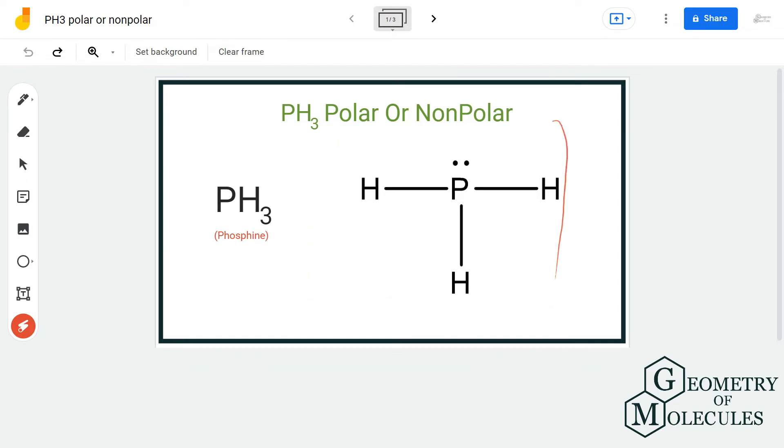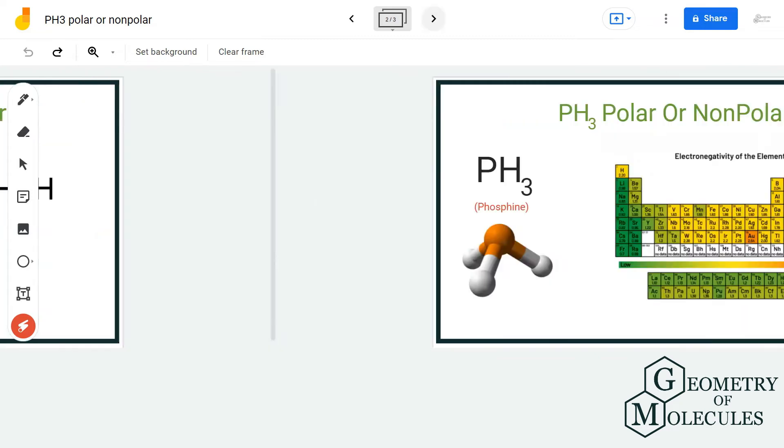So this is the Lewis structure of PH3 molecule in which the phosphorus atom is in the center and it is forming single bonds with three hydrogen atoms. Besides that, it also has a lone pair of electrons. Now that we know the Lewis structure, let's proceed forward and check out the electronegativities.